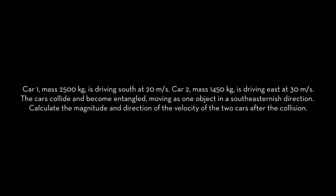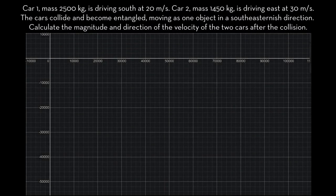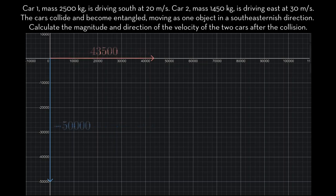Car 1, mass 2500 kilograms, is driving south at 20 meters per second. Car 2, mass 1450 kilograms, is driving east at 30 meters per second. The cars collide and become entangled, moving as one object in a southeasternish direction. Calculate the magnitude and direction of the velocity of the two cars after the collision. This is the momentum vector for car 1, and this is the momentum vector for car 2. The final momentum vector can be found by adding the two vectors in a head-to-tail fashion, like so.